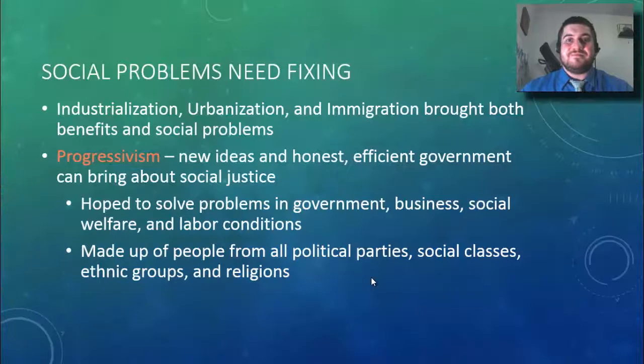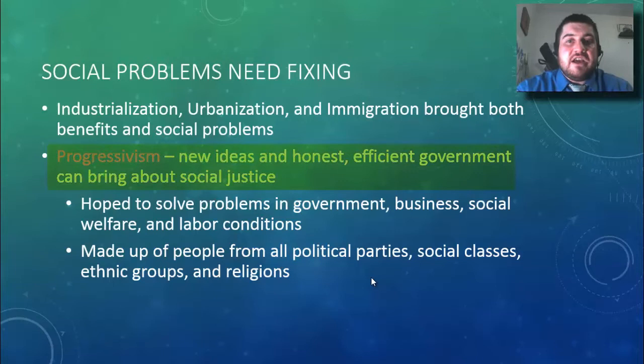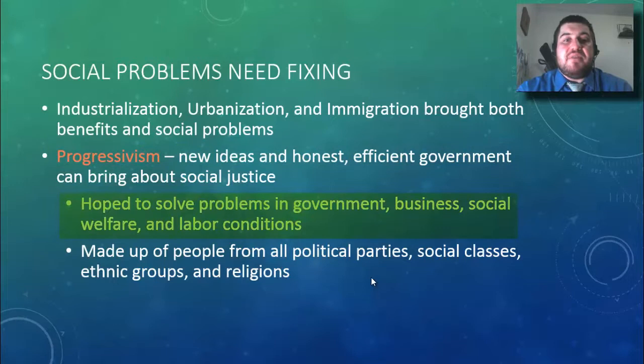There are social problems that need fixing. The industrialization, urbanization, and immigration brought both benefits and social problems. The idea of progressivism is that new ideas and human ingenuity, along with honest and efficient government, can bring about an end to these social problems and deliver social justice.